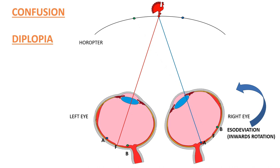Every object that is seen by us has an actual physical location in space and a physiological perception by our brain of its location. When there is no squint, the physiological perception of the location of an object perceived by our brain is the same as its actual physical location in space. But when there is squint, an object is perceived by the brain to have a different physiological location than its actual physical location in space — this is why diplopia happens.